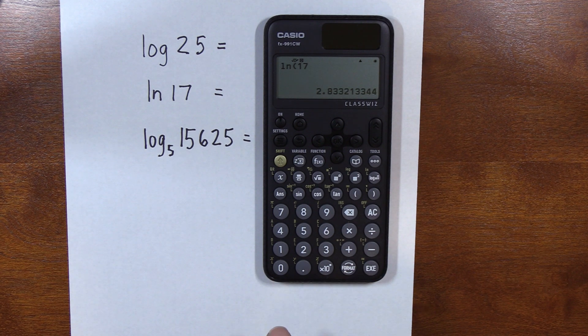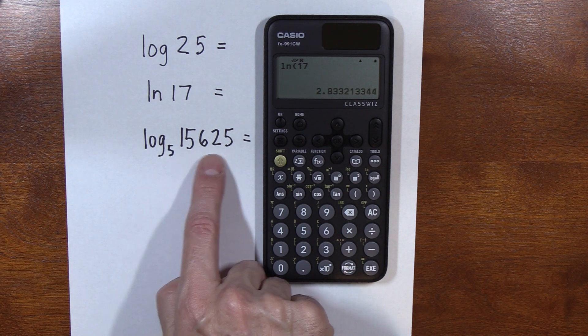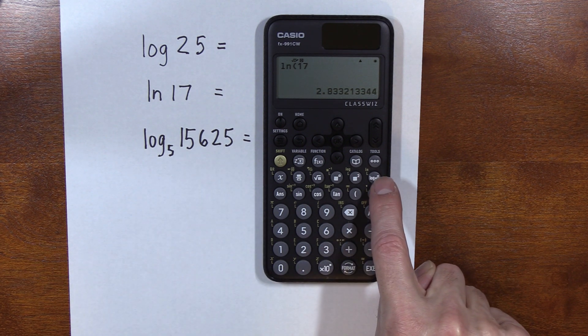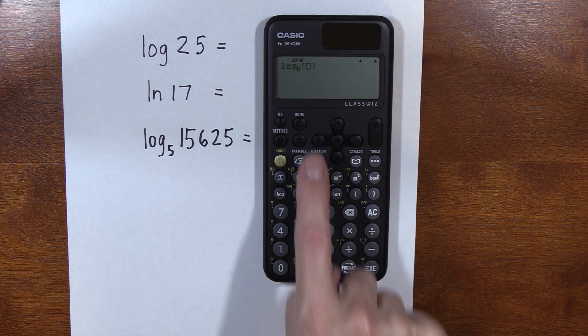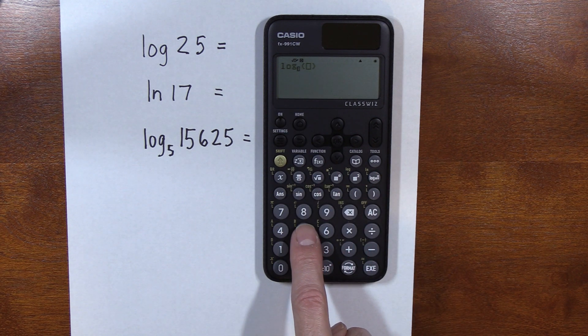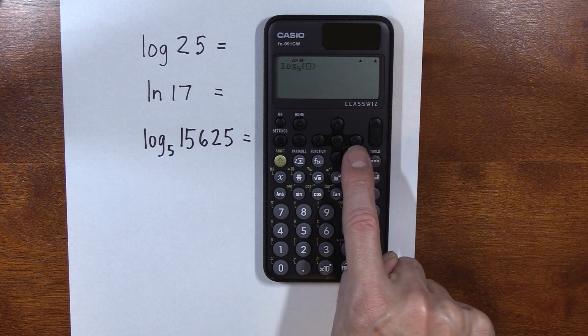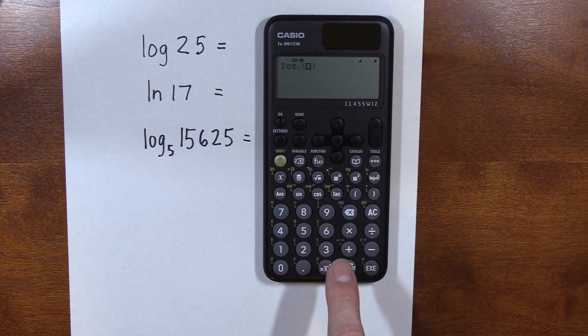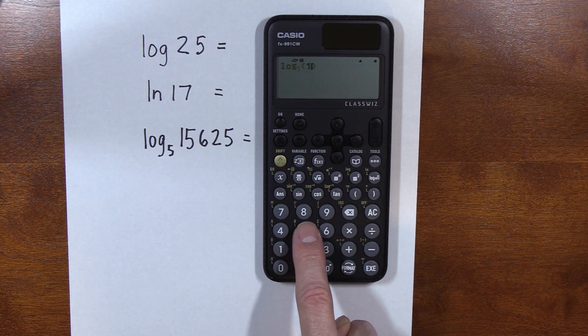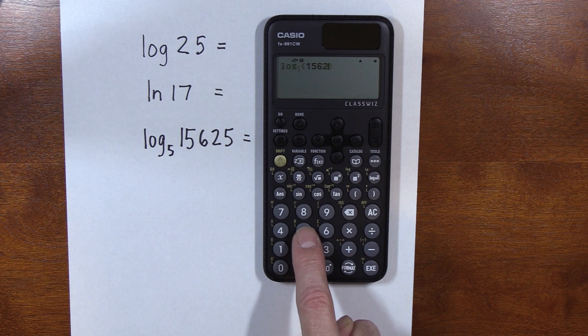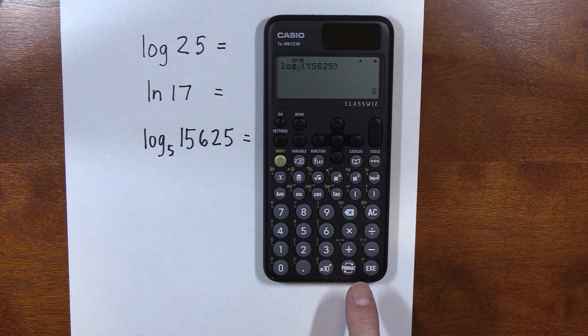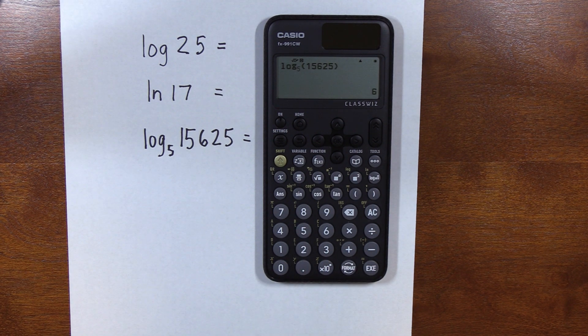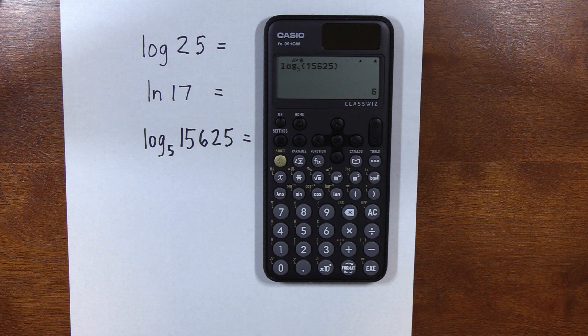And lastly, let's do log base 5 of this number. This dedicated key here, log base. So it starts asking what base, we hit 5. Then I'm going to hit the arrow key to go to the right. I'm going to type in my number, 15,625. The log base 5 of 15,625 is 6.